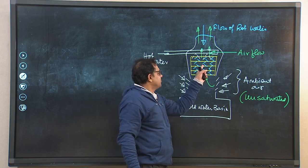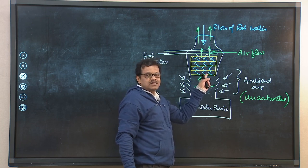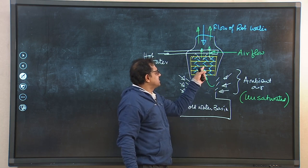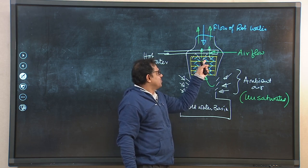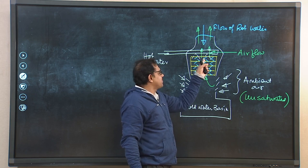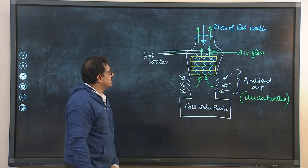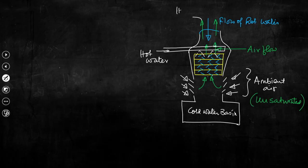If the incoming air gets saturated midway in its travel upward, that saturated air will again be in contact with hot water towards the upper part of the fill, and eventually we get hot and moist air exiting the tower. The water can be cooled due to evaporative cooling only up to a temperature that is the wet bulb temperature of the incoming ambient air, because if air becomes saturated no further cooling occurs due to evaporation.